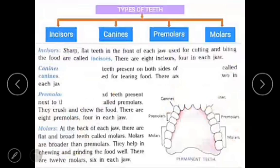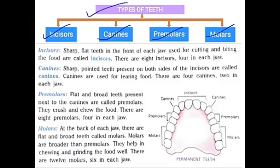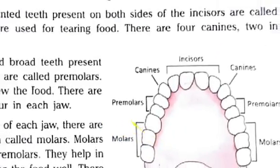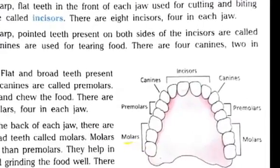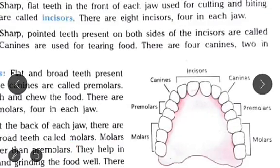Permanent teeth are of four kinds: incisors, canines, premolars, and molars. Incisors are sharp flat teeth in the front of each jaw used for cutting and biting the food. There are eight incisors, that is four in each jaw.